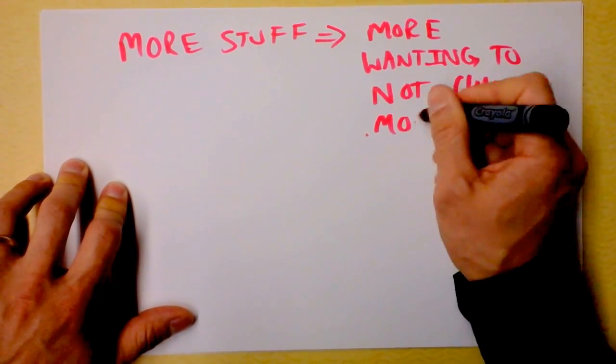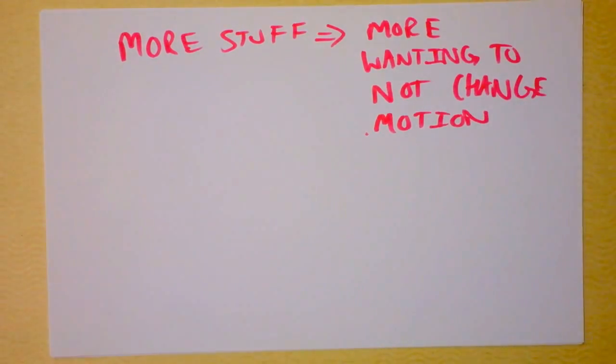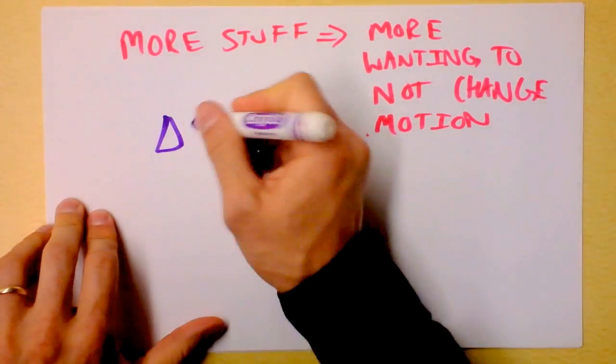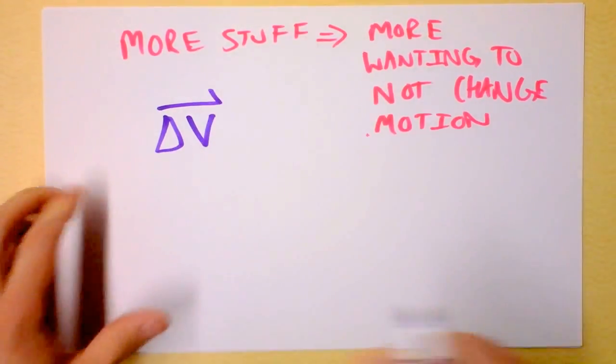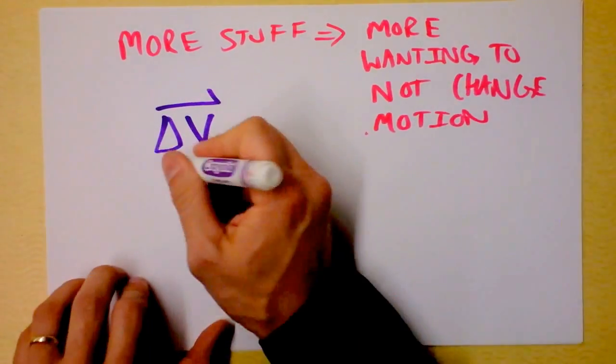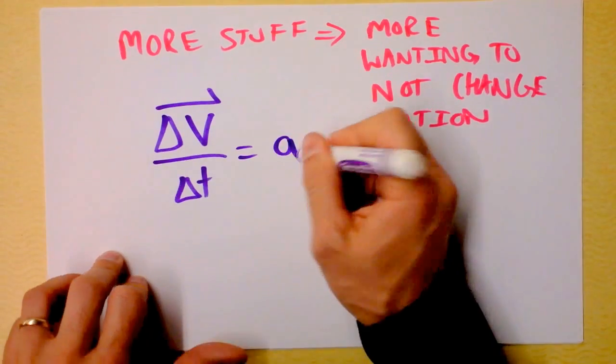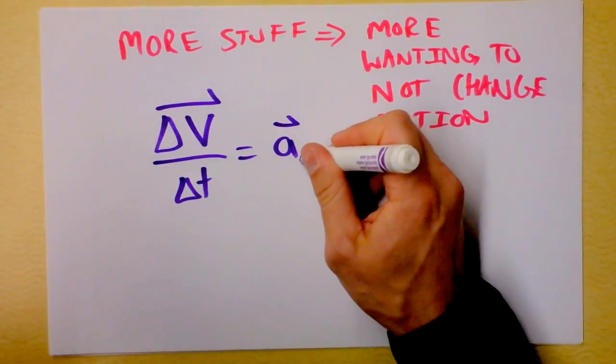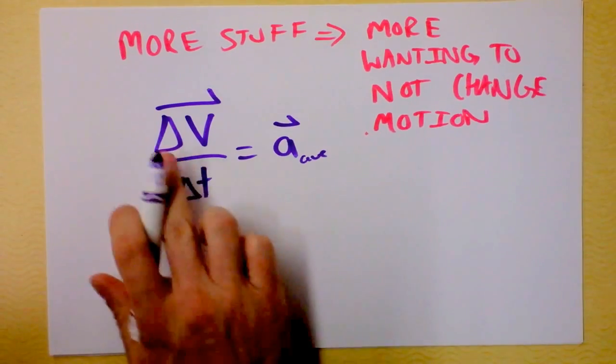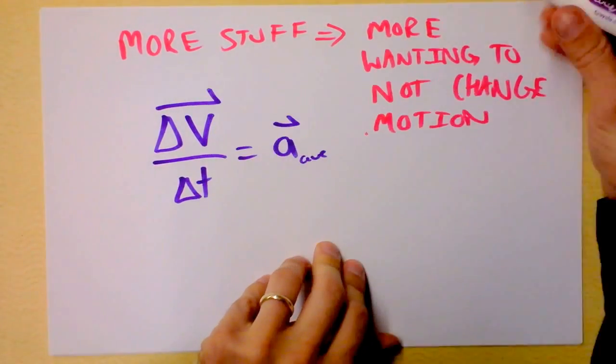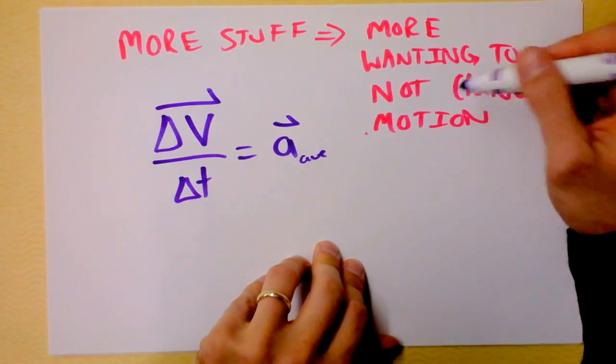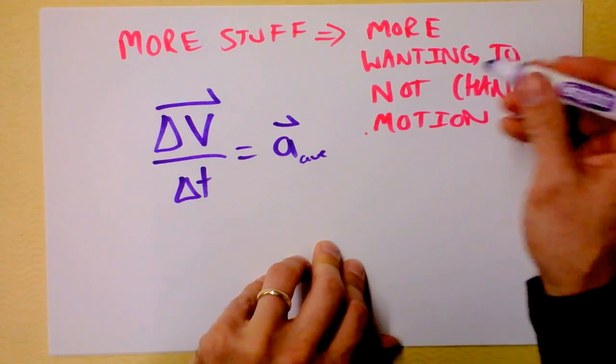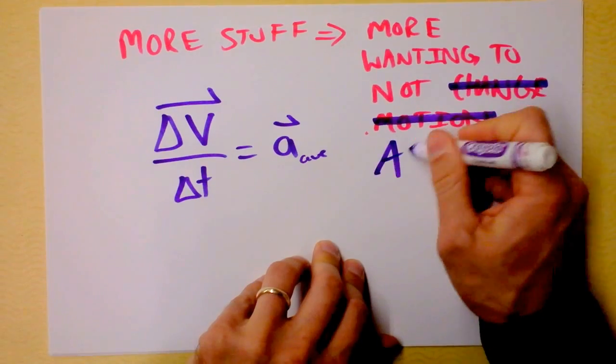What the heck does that mean? If something doesn't want to change its motion, can we get a definition of changing motion? Check it out. I'm thinking that might be delta V, the change in something's motion. But if I take delta V and divide it by delta T, that sucker is acceleration. So that's kind of interesting. Acceleration is change in motion. So I guess when I say more stuff, more wanting to not change motion, then I guess that's the same thing as saying more wanting to not accelerate.